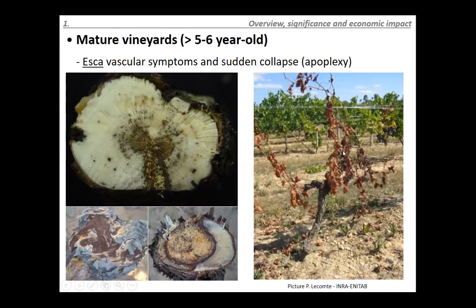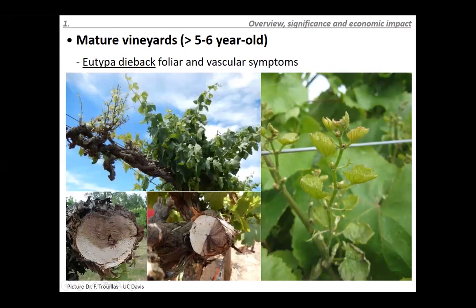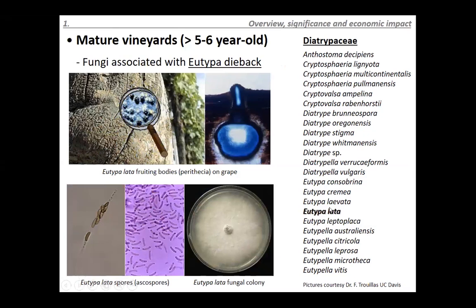Another disease of mature vineyards is Eutypa dieback, long known and very characteristic for its foliar symptoms: very short internodes, cupped leaves, necrosis on the leaves, and complete abortion of clusters. These symptoms are caused by secondary metabolites or toxins produced by the fungus Eutypa lata, translocated through the vascular system and affecting the foliage. The typical internal symptoms are these wedge-shaped cankers that colonize the wood. For a long time only Eutypa lata was known, but recently multiple species within the Diatrypaceae family have been associated with the disease.